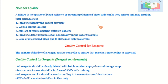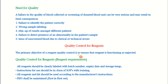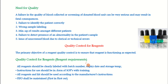Today we will discuss two topics: the quality control for the reagents and the quality control for the blood components. Starting with quality control for the reagents — the primary objective of reagent quality control is to ensure the reagent is functioning as expected. All reagents should be clearly labeled with batch number, expiry date, and storage temperature.